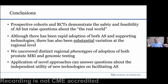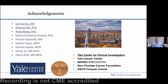In conclusion: prospective cohorts and randomized trials demonstrate the safety and feasibility of active surveillance, but raise valid questions about its use and outcome in the real world. Although there has been rapid adoption of both active surveillance and the technologies that support it, there's also substantial variation at the regional level. In our work, we uncovered distinct regional phenotypes of adoption of both prostate MRI and genomic testing, which is novel and requires further study. The application of these approaches can also ask questions about the independent utility of new technologies on facilitating active surveillance, and appears to show a positive association for MRI but a null finding for genomic testing. I want to thank my mentors and collaborators, Cary Gross, Xiaomei Ma, Preston, and many others. I'll take any questions.